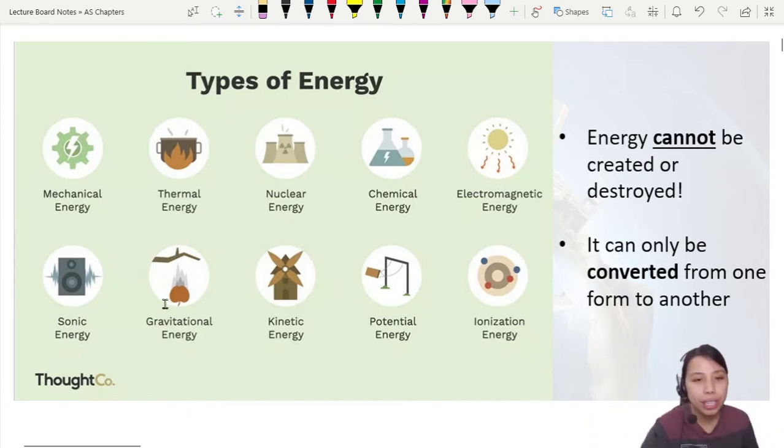It can only be converted from one form to another. Maybe from gravitational to kinetic, kinetic to potential, potential to chemical energy. So when we say energy is lost, what we really mean is that energy, maybe kinetic, has been converted into heat - thermal energy which we cannot really use. So remember this, two important facts about energy.